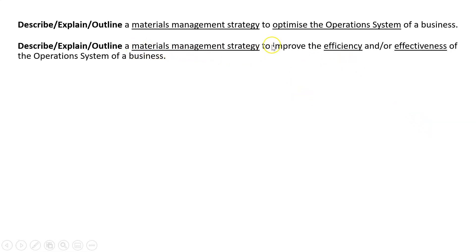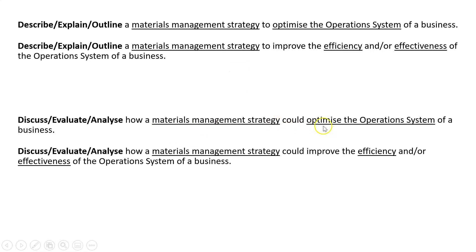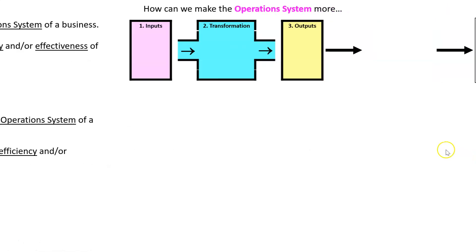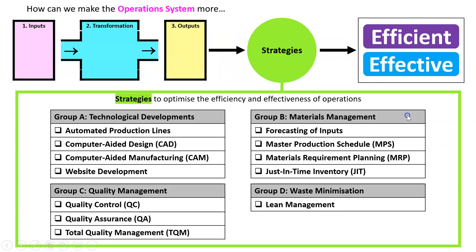Or maybe the same question but instead of optimizing operations it says improve the efficiency or effectiveness — same thing. Then maybe discuss them, so you've got the same strategies and discuss how they could optimize operations, which is basically asking how they could make it more efficient and effective, and also some disadvantages. Remember we've got our operation system and we're trying to make it more efficient and effective.